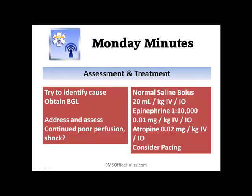Try to identify the cause using those differentials I mentioned and move to the appropriate protocols. Get a blood sugar — maybe they are hypoglycemic. Reassess the patient after you've addressed some simple causes. If the patient continues to have bradycardia, poor perfusion, and shock, then you're going to move to more aggressive treatment — things like normal saline boluses, epinephrine, atropine, and maybe even considering pacing the patient. This is all guided by your local guidelines and skill level.